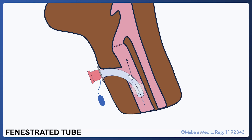One caveat to highlight is that you can also get fenestrated tracheostomy tubes. These have one or more small holes within the tube, meaning that air can pass upwards and outwards via the glottis whilst the cuff is up, thereby enabling sound to be generated. Though fenestrated tubes are useful in rehabilitating the patient's voice, they do run the risk of upper airway secretions dripping down through the fenestrations into the patient's lungs or obstructing the tube itself.